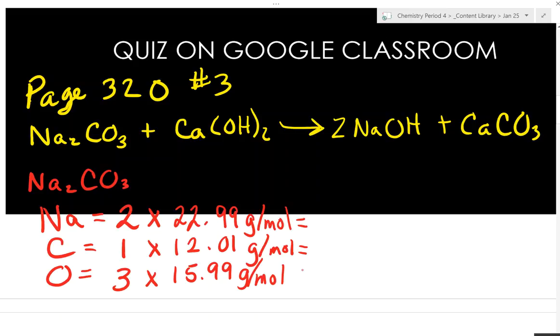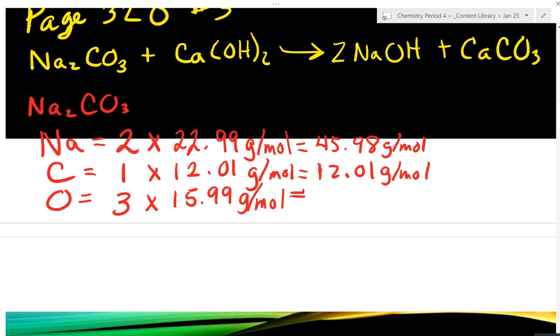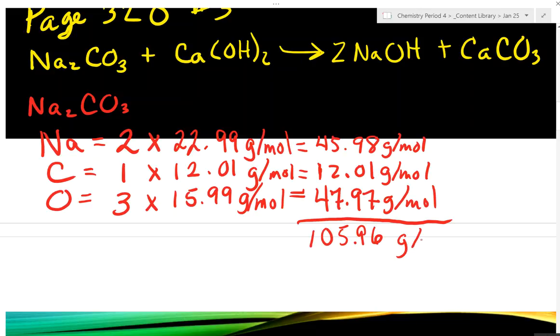Take out your calculators and tell me what two times 22.99 is. 45.98 grams per mole. Next one's easy. Then tell me what 15.99 times three is. 47.97 grams per mole. We add these up. So we got 105.96, that sound right?